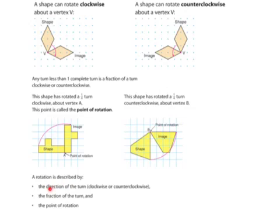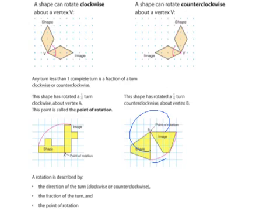So a rotation, when you describe it, you describe the direction of the turn — is it counterclockwise or clockwise? The fraction of the turn — is it a quarter, a half, or a three-quarter? And the point of rotation, the point that it rotated around. Now, a turn can be looked at two ways. We can say that this is a quarter turn clockwise, or comparing it the other way, from the image to the shape, we can also see that this is a three-quarter turn clockwise as opposed to a quarter turn counterclockwise. So any rotation can be described as both — just flipping your point of view.